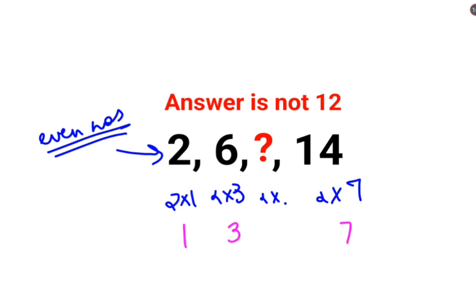So the next number, all of them are basically odd numbers. So the next number should have been 5. So answer for this question mark should have been 10. 2 multiplied by 5. Answer is 10.